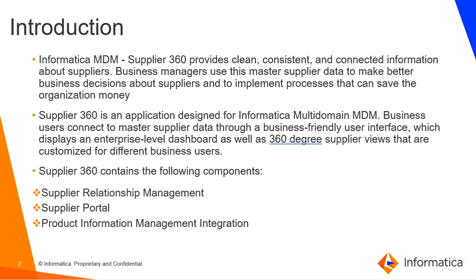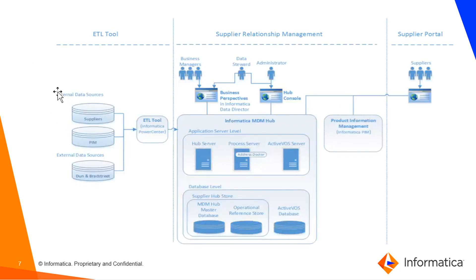Looking at the architecture diagram: external or internal sources provide data that is onboarded via an ETL tool such as Informatica PowerCenter. Following the traditional MDM approach, this data is loaded into Informatica MDM. Supplier 360 comes with its own schema and sample data. As part of the Supplier Relationship Management solution, you have the Informatica MDM Hub where data is stored, ActiveVOS for workflow management, and optionally PIM or P360 integration with S360. When PIM is integrated with S360, you can view the products supplied by suppliers along with their different dimensions. Supplier 360 comprises the Hub, PIM, ActiveVOS, and IDD for business users to view supplier information.